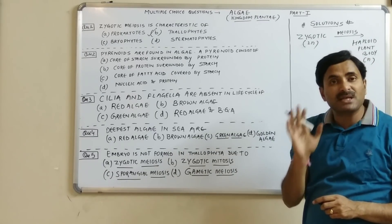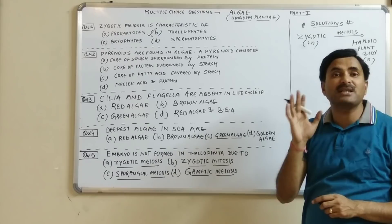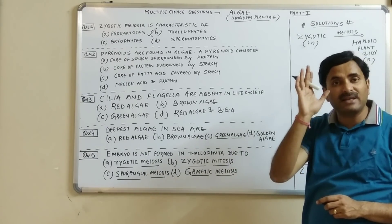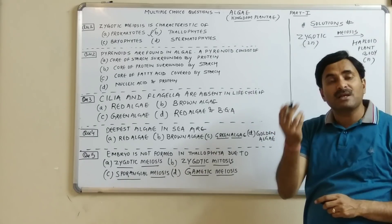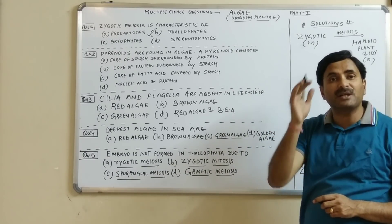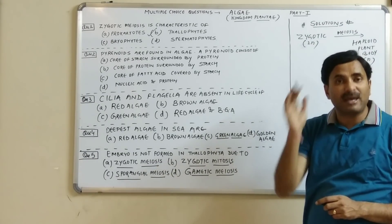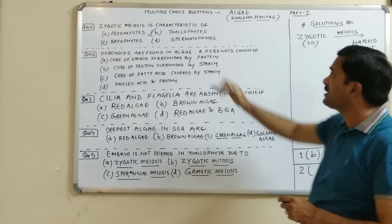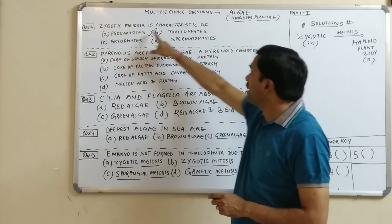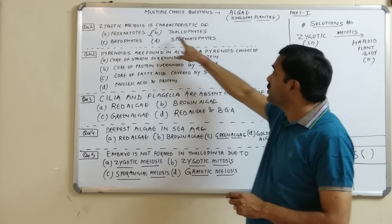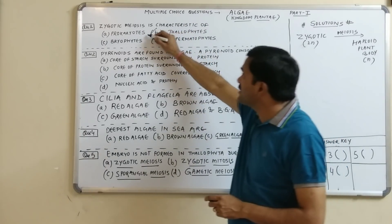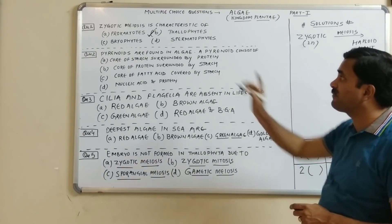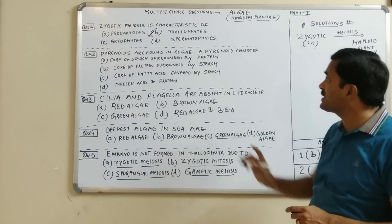Zygotic meiosis is the feature of lower category plants. In thallophytes, algae and fungi are included, and zygotic meiosis is the feature of algae and fungi. In higher plants, the zygote never undergoes meiosis — it undergoes mitosis to form the embryo. But in lower plants, embryo is not formed. Zygotic meiosis is the characteristic feature of thallophytes, so question number one has answer B.